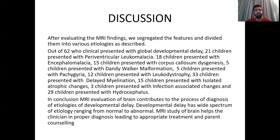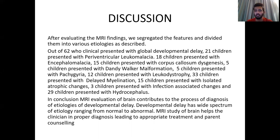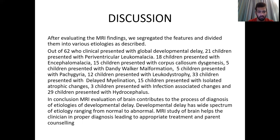After evaluating the MRI findings, we segregated the features into various etiologies. Out of 62 children who presented with global developmental delay, 21 had periventricular leukomalacia, 18 had encephalomalacia, 15 had corpus callosal dysgenesis, 5 had Dandy-Walker malformation, 5 had pachygyria, 12 had leukodystrophy, 33 had delayed myelination, 15 had isolated atrophic changes, 3 had infection-associated changes, and 29 had hydrocephalus.